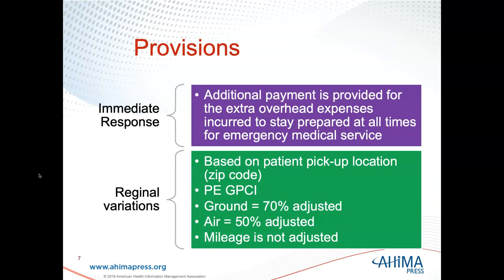This talks about immediate response and regional variations. An additional payment is made to ambulance providers and suppliers who furnish immediate response services in emergency medical situations — that's where you get BLS, Advanced Life Support Level 1, or Advanced Life Support Level 2. Those are typically from services responding to a 911 call, and they get an additional payment for that. They also look at regional variations based on geographic location, and a GPCI for ambulance is applied.